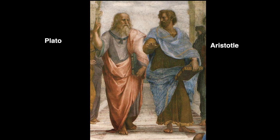Plato points up because in his philosophy, the changing world that we see around us is just a shadow of a higher, truer reality that is eternal and unchanging, and includes things like goodness and beauty. For Plato, this otherworldly reality is the ultimate reality and the seat of all truth, beauty, justice, and wisdom. Aristotle holds his hand down because in his philosophy, the only reality is the one that we can see and experience by sight and touch — exactly the reality dismissed by Plato.